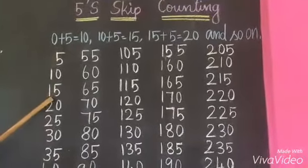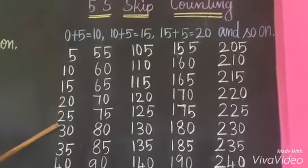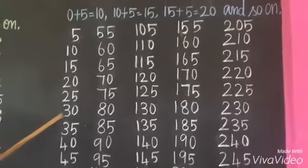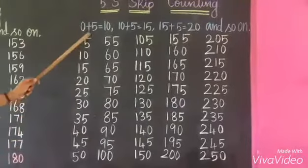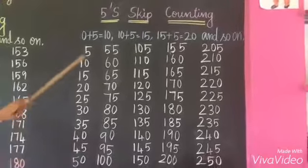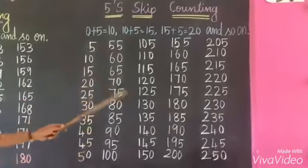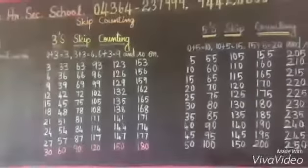10 plus 5, 15. 15 plus 5, 20. 20 plus 5, 25. 25 plus 5, 30. 30 plus 5, 35. 35 plus 5, 40. 40 plus 5, 45. 45 plus 5, 50. And so on. Dear students, continue the Skip Counting up to 500.